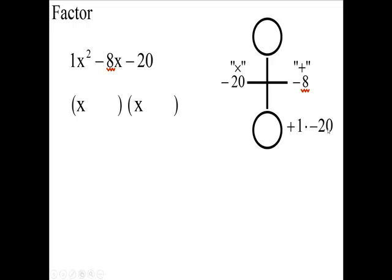1 times negative 20 is negative 20. So, not just a 20. I want it to be a negative 20. And since the largest one is negative, when you add them together, you'll get a negative 19 here. So, the larger number has to be negative. When you add them, you get negative. Remember, we're looking for negative 8. So, if I add 1 and negative 20, I get negative 19. That's not it.